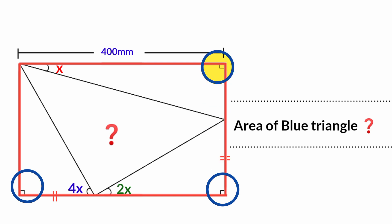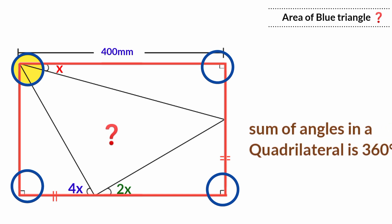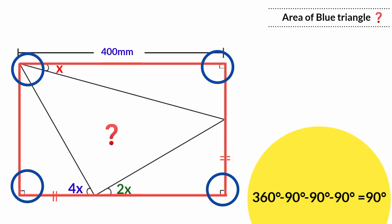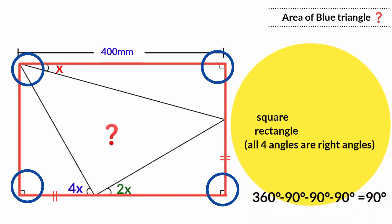And definitely the fourth one, even if you aren't told, must also be a right angle, because the sum of angles in a quadrilateral is 360 degrees. 360 minus 90 minus 90 minus 90 equals 90 degrees. There are two types of quadrilateral which have all four angles equal to 90 degrees, which are a square and a rectangle. But keep that aside for now.